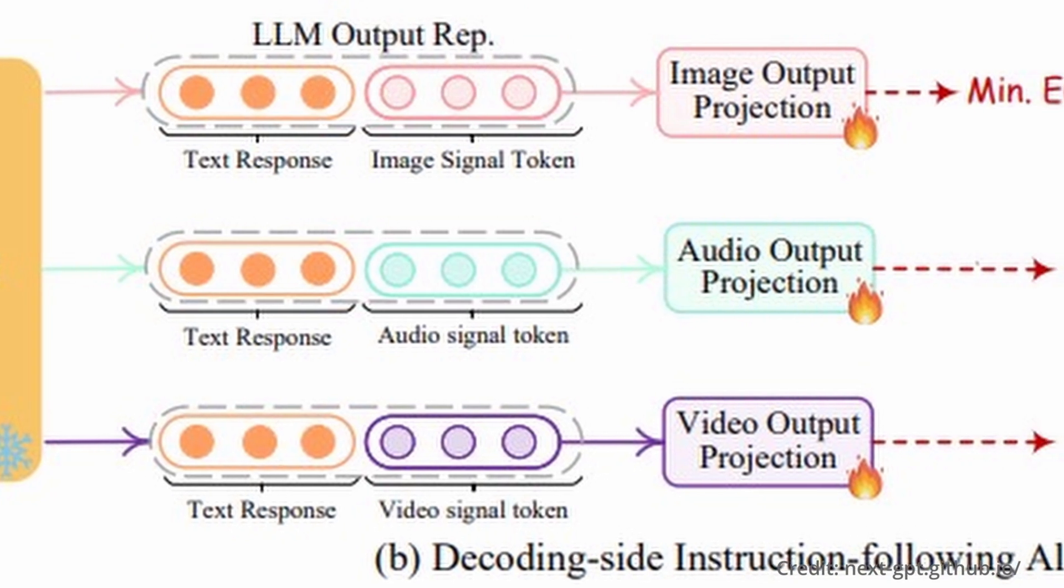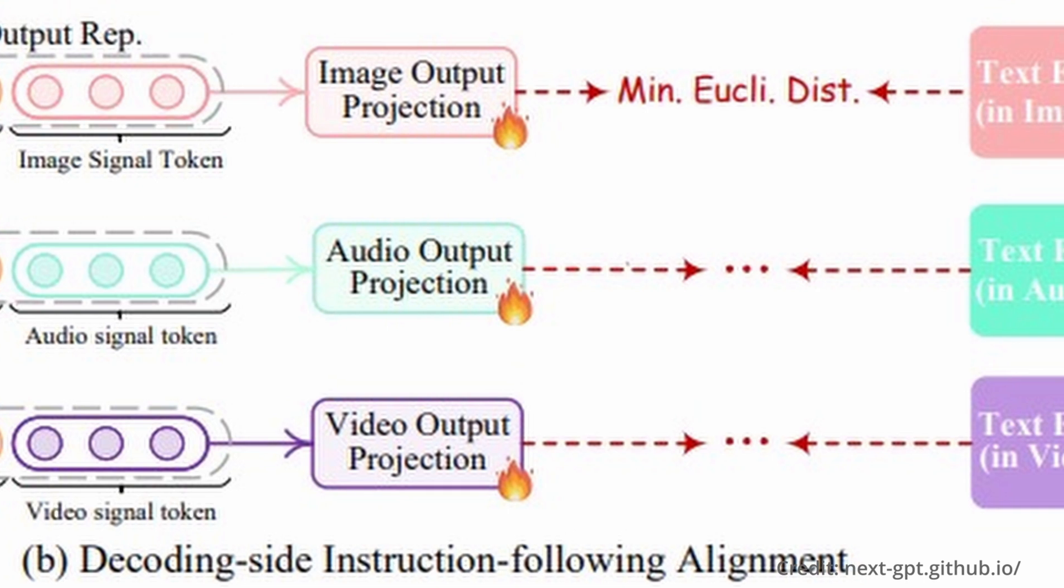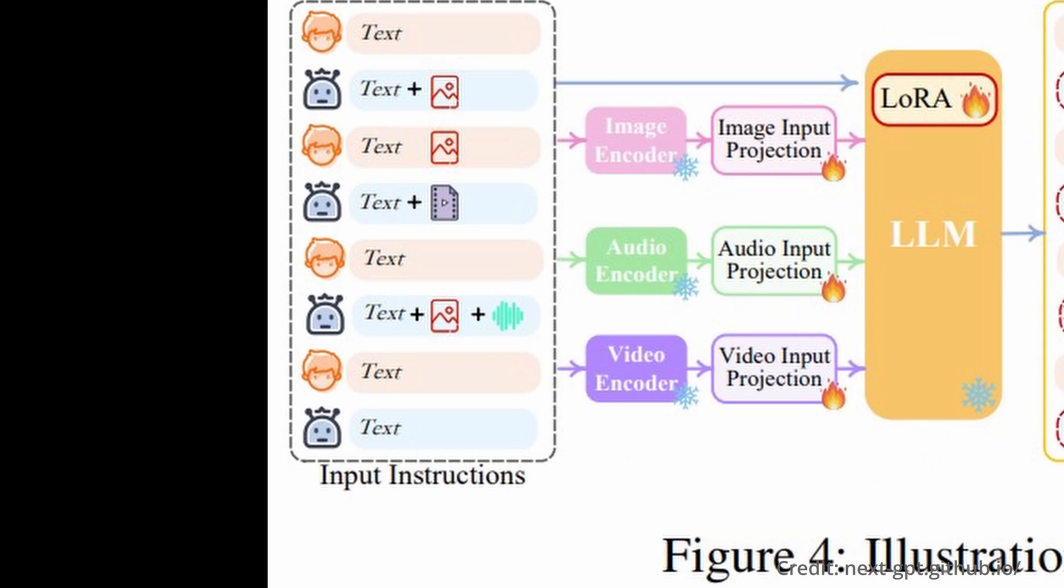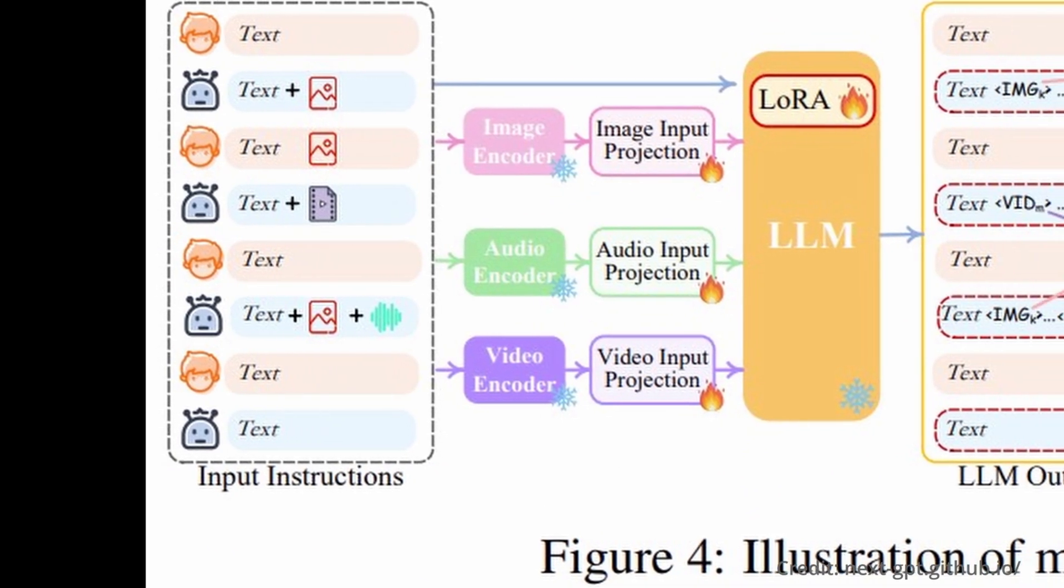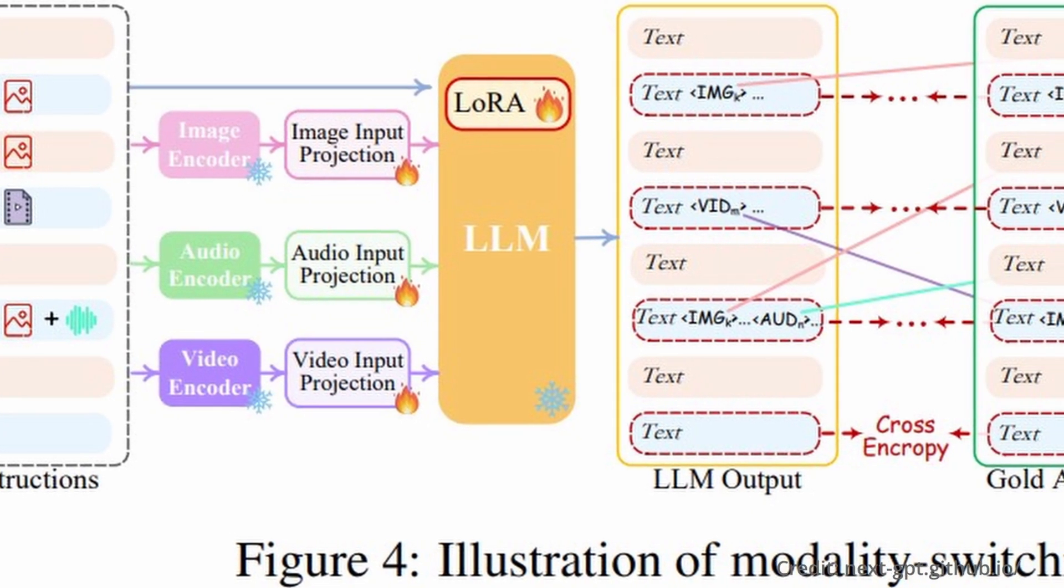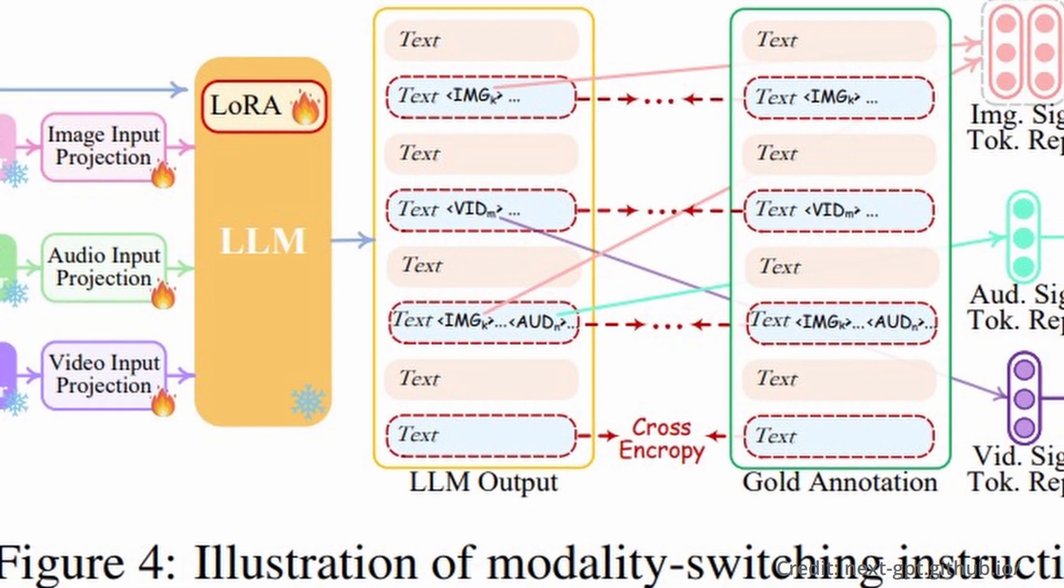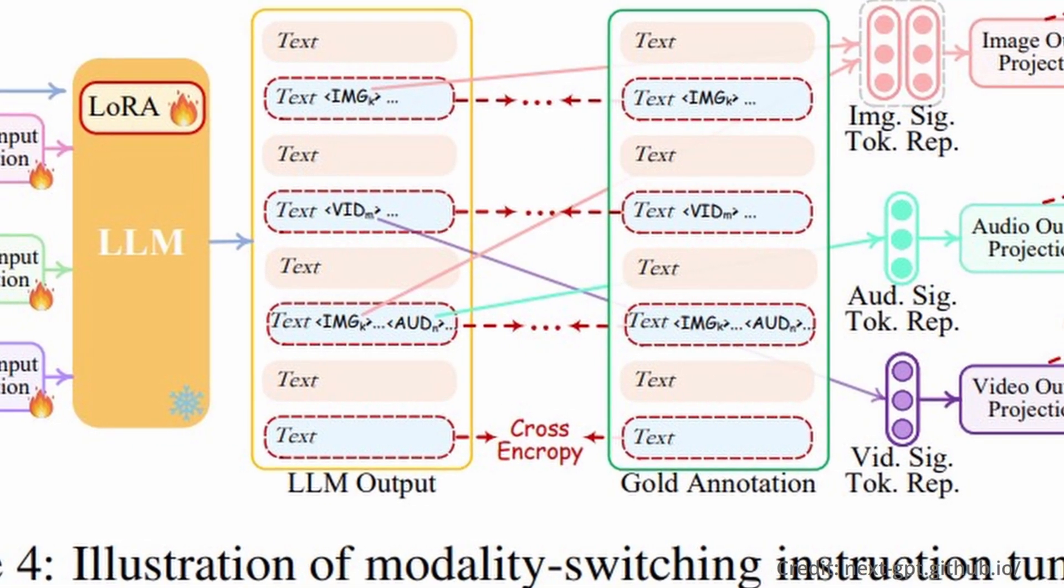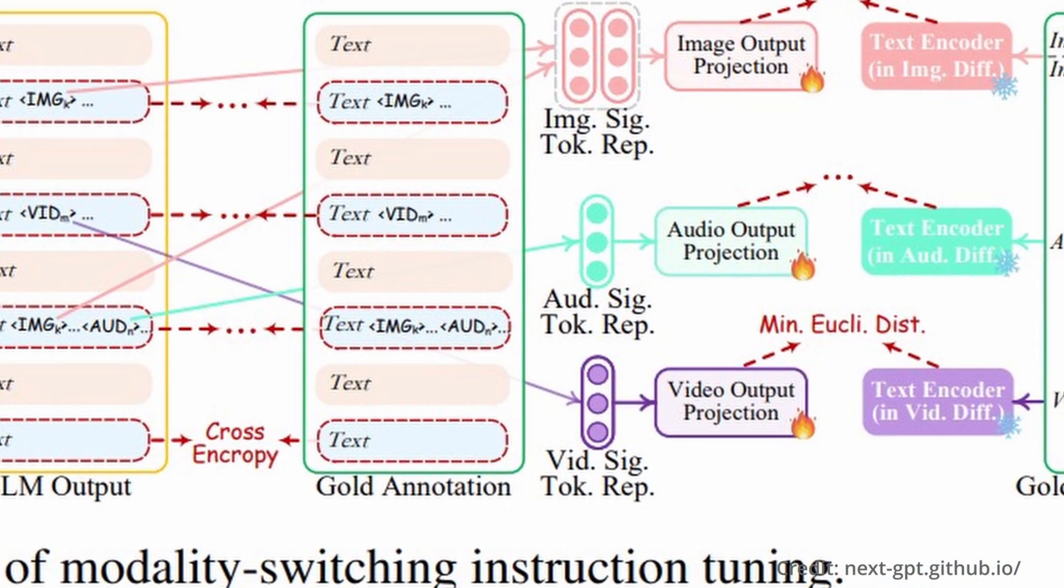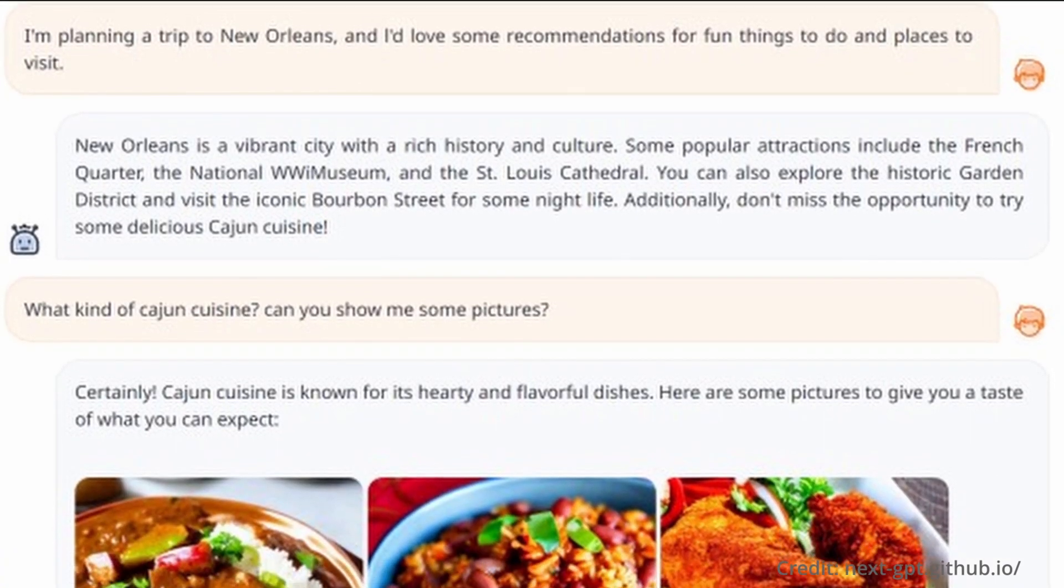Most importantly, this intricate model employs existing high-performance encoders and decoders requiring tuning of only a minimal amount of parameters, facilitating low-cost training and convenient extension to other potential modalities. It also introduces modality-switching instruction tuning, which enables complex cross-modal semantic understanding and content generation based on a meticulously curated high-quality dataset. The advancements embodied in NextGPT herald the promising potential of creating an AI agent capable of modeling universal modalities.